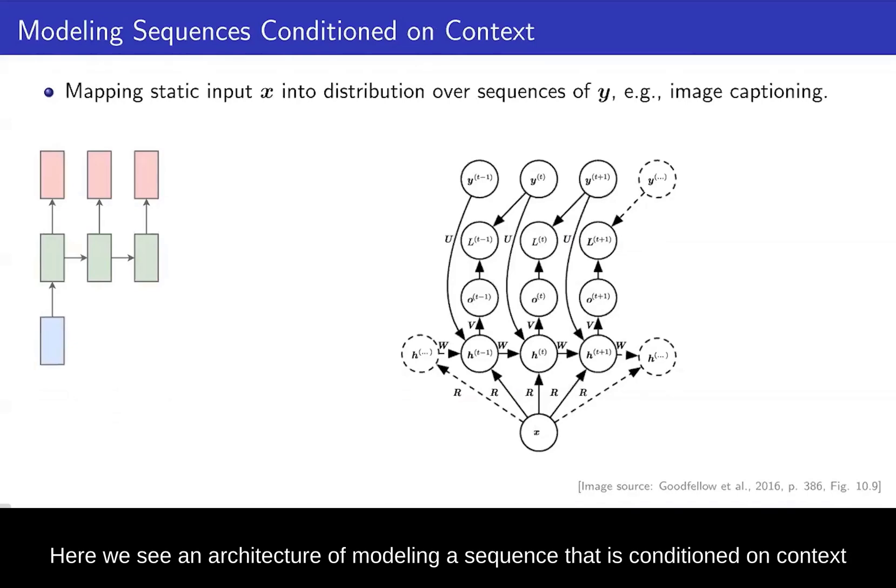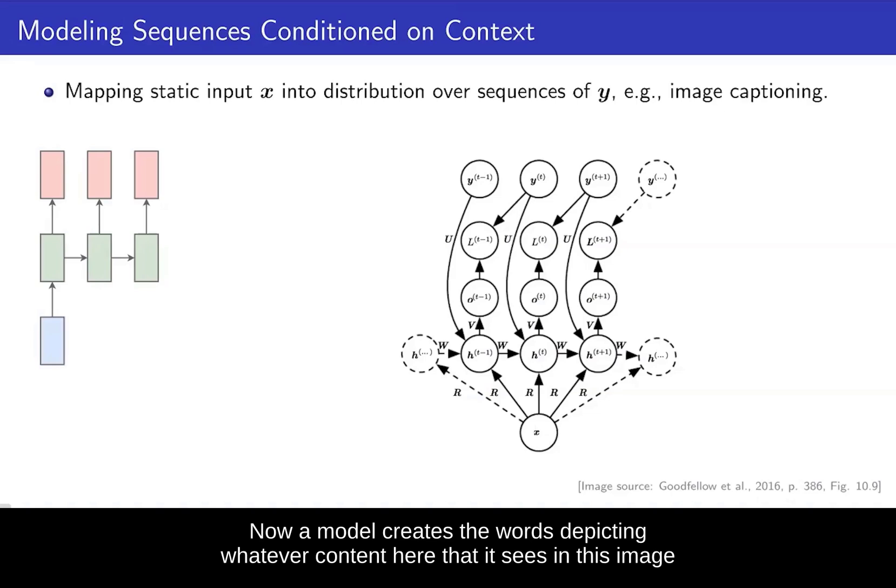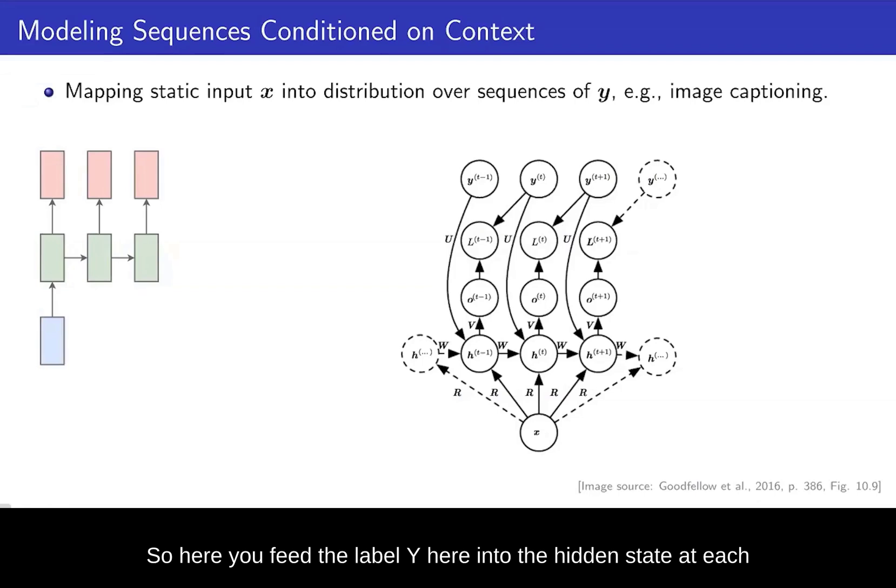Here we see an architecture of modeling a sequence that is conditioned on context. This is the case with the image captioning example that we saw before. So we have an input here, for example X, which is an image, which is then fed into a network at time step T. Now a model creates the words depicting whatever content here that it sees in this image. So here you feed the label Y here into the hidden state at each time step in order to influence the prediction at the next time step. So as you can see here at each instance, we give the input label Y which influences the hidden units at the next time step.